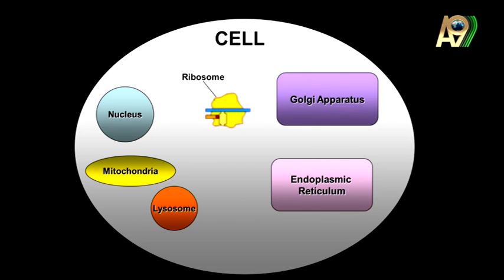When this signal recognition particle protein comes, translation stops for a while, and the ribosome, the messenger RNA, and the amino acid chain are taken to the rough endoplasmic reticulum. From the start to here, we see that all the jobs are done by other proteins.